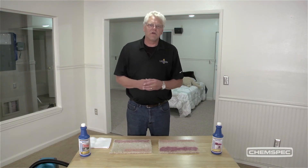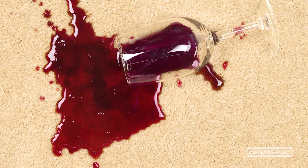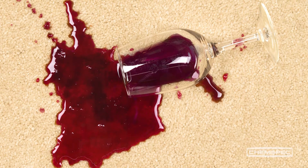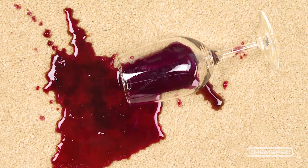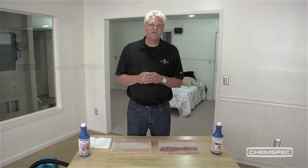So what we're going to do now is actually work on a red wine stain. We've asked the customer a series of questions — we asked them what it was, they told us it was red wine. Well, of course somebody else spilled it, not them. But the important thing to understand is most red wines are going to be organic, naturally occurring. So therefore we would use an oxidizer to remove those.